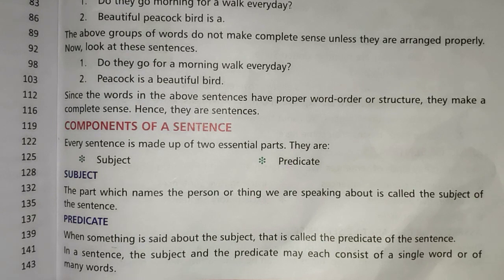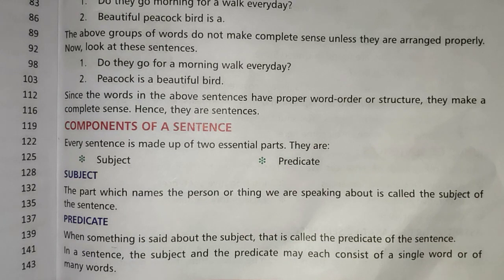Subject: the part which names the person or thing we are speaking about is called the subject of a sentence. So in a sentence, what we are talking about can be a person or can be a thing, and that part of the sentence is called the subject.